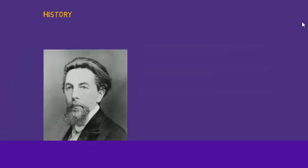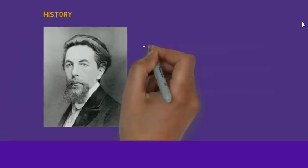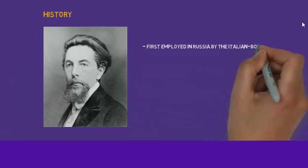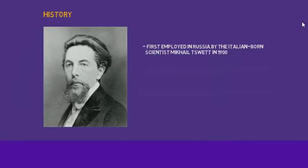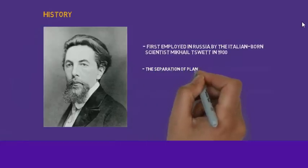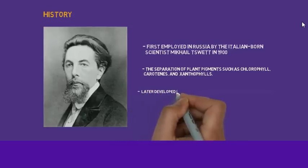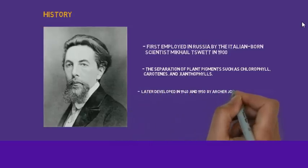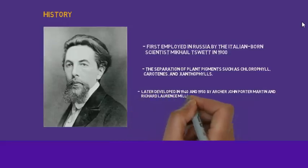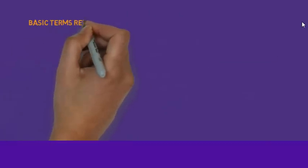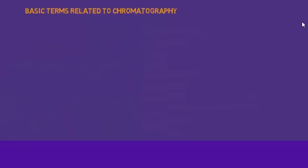The history of chromatography: it was first employed in Russia by the Italian-born scientist Mikhail Tswett in the 19th century. He separated plant pigments such as chlorophyll, carotenoids, and xanthophyll. It was later developed in the 1940s and 1950s by Archer Martin and Richard Synge. Now looking toward the basic terms that define chromatography.